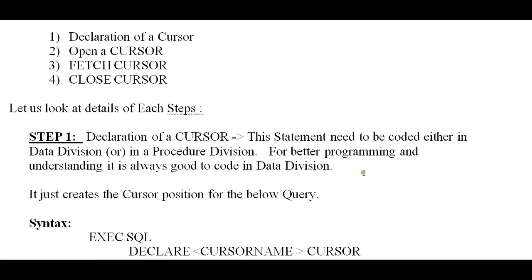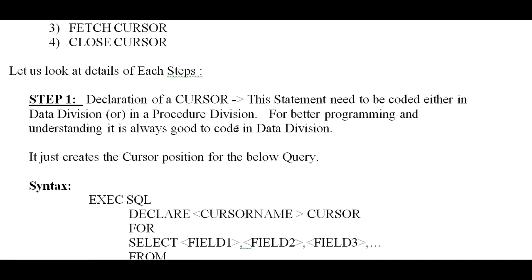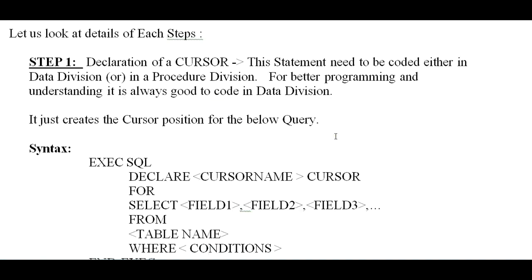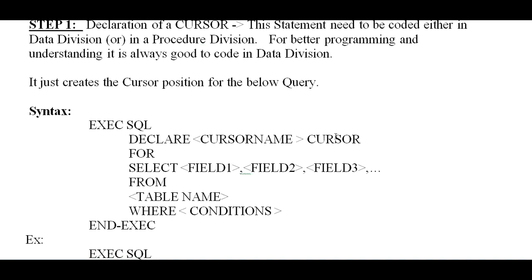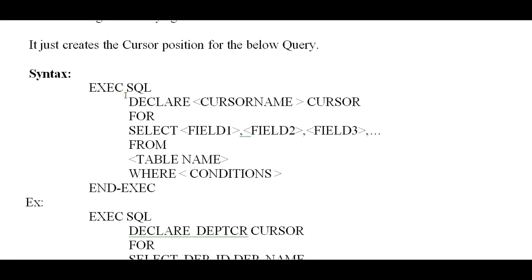Let us look into the details of each step. Step 1 is the declaration of a cursor. This statement needs to be coded either in the Data Division or in the Procedure Division. For better programming and understanding, it is always good to code it in the Data Division. It simply creates the cursor position for the associated query. The syntax is: EXEC SQL DECLARE cursor_name CURSOR FOR SELECT field1 FROM table_name WHERE conditions.